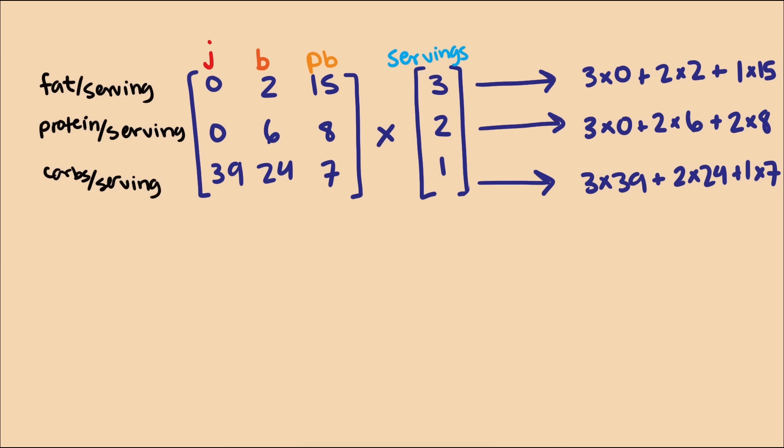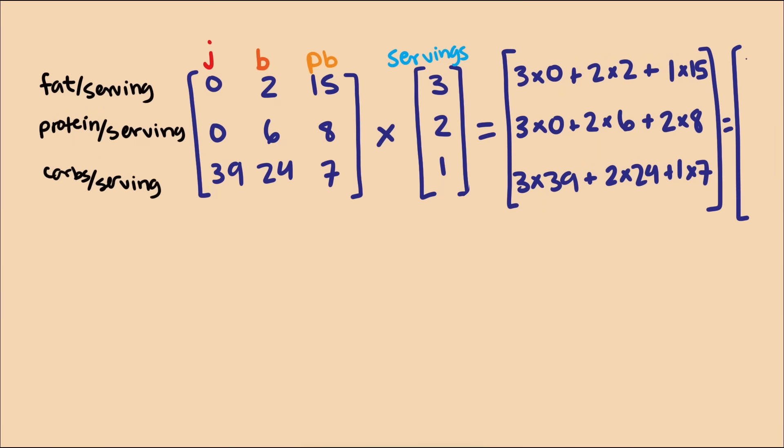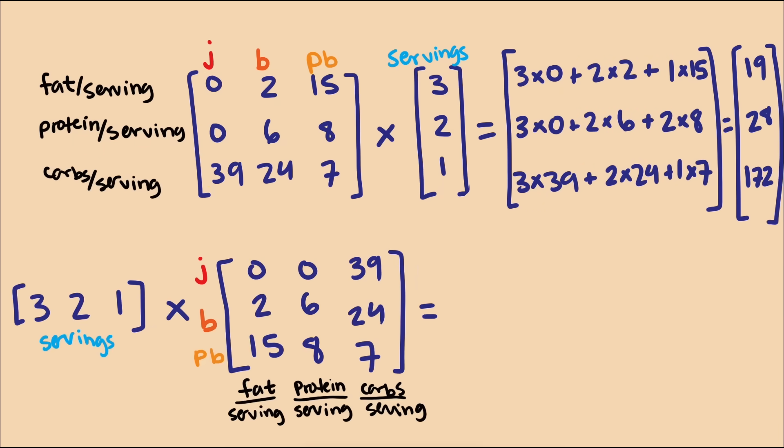We need total grams of protein, fat, and carbs. It makes sense, then, that we should set up the final product vector to align with the rows or columns of the matrix that correspond to protein, fat, and carbs. So if we write the matrix this way, then the final product vector should be this way. Similarly, if we write it this way, the product should look like this.